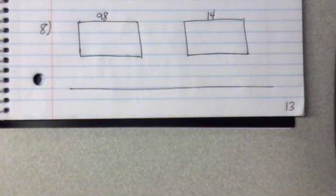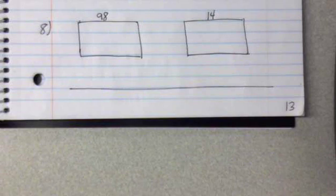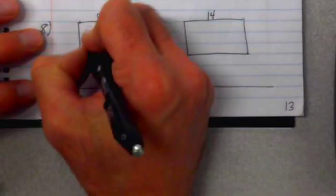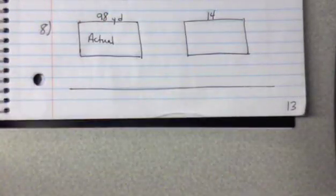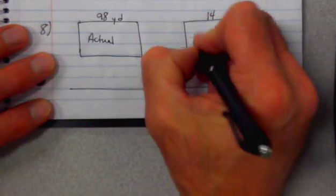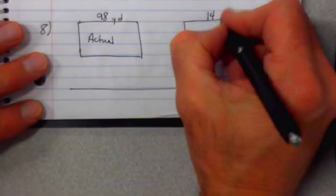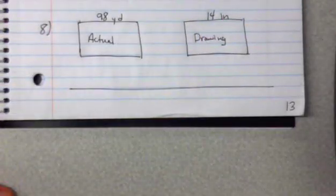I would like us to look very quickly here at number eight, this is the one about the soccer field where you have these two fields. I have this one here which is my actual field which is 98 yards across the length, and then I have my drawing of the field which is 14 inches across the top.